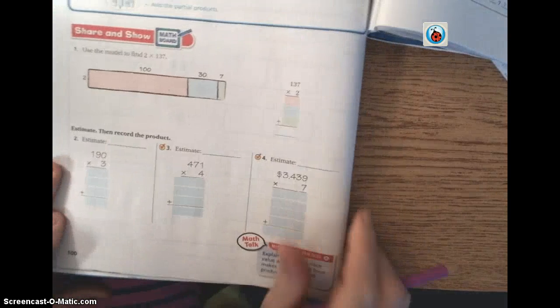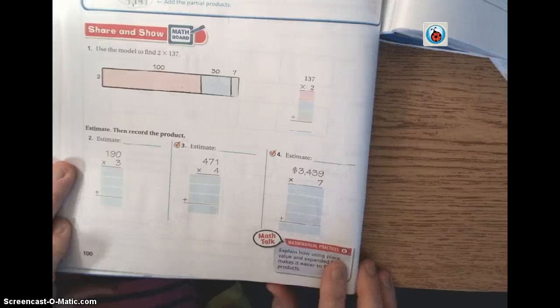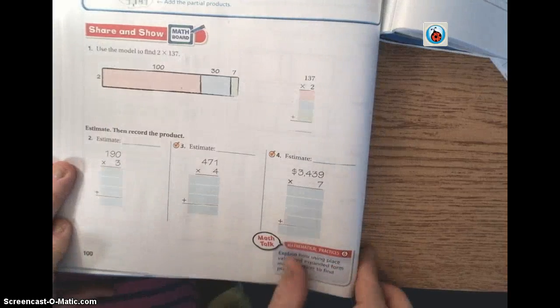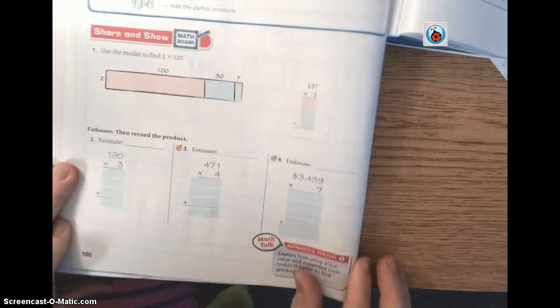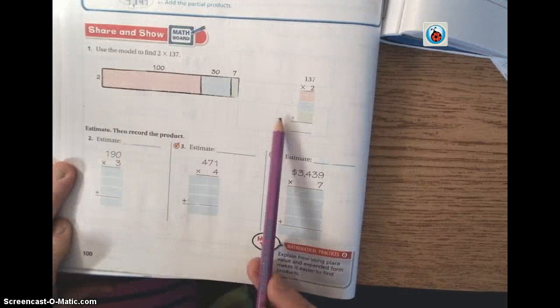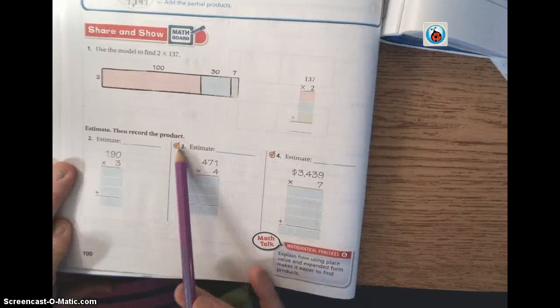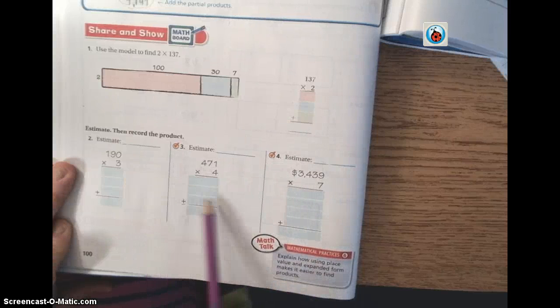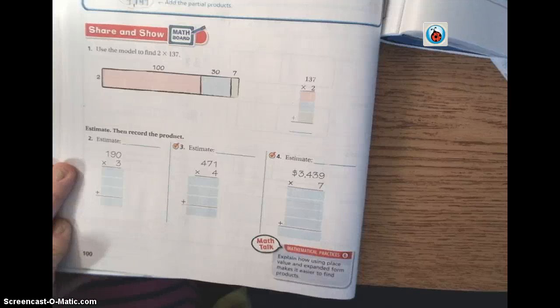You guys are going to go ahead and you're going to go down on page 100. You're going to do numbers 1 through 4. I want you to focus on numbers 3 and 4. Actually, do number 1 first, because that's going to help you visualize it. And then do numbers 3 and 4 to make sure that you get those done, because those will determine your groups.